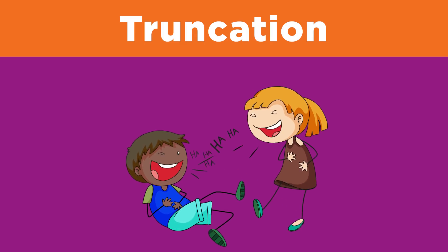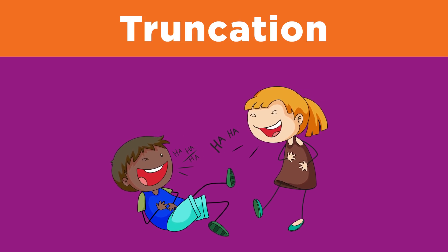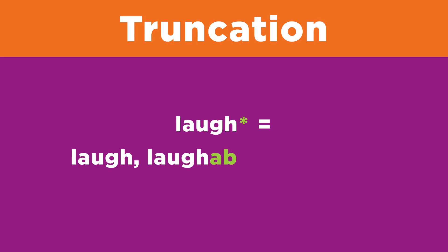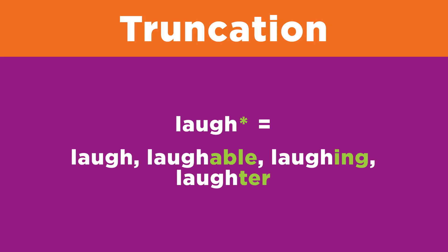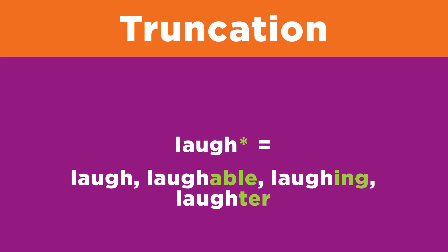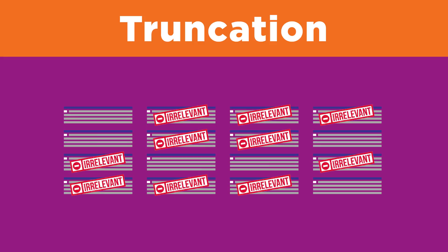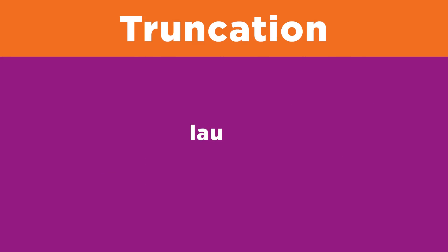For example, say you were researching the benefits of laughter. If you shorten the word to 'laugh' followed by an asterisk, you will get results that include the words laugh, laughable, laughing, laughter, etc. Be careful not to truncate too early in the word, otherwise you could end up with many results that are not helpful. If you searched for 'lau*' instead of 'laugh*,' your results could include articles that have nothing to do with laughter.